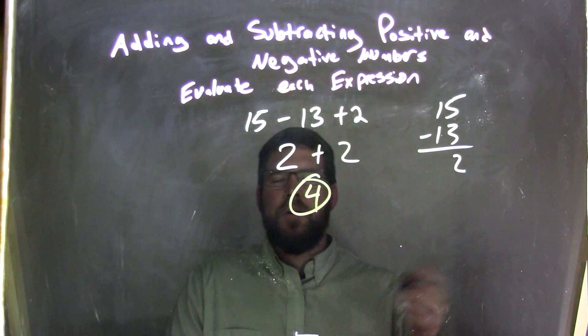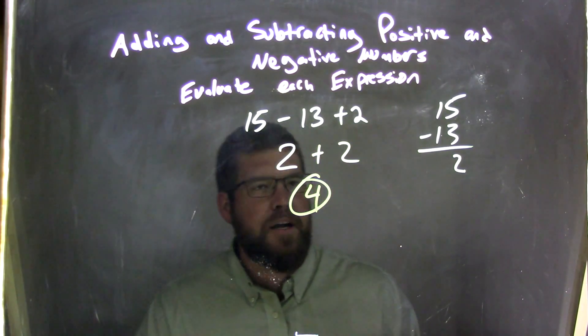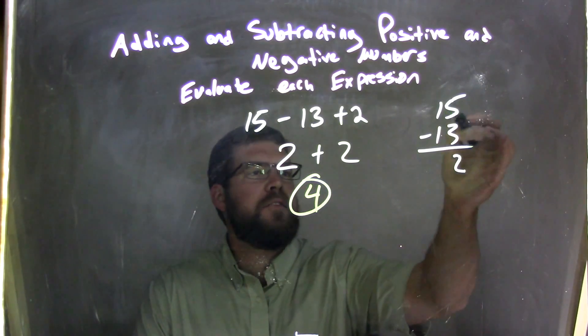So again, let's recap. We started with 15 minus 13 plus 2. We're not going to do a plus or negative here, we just subtracted it. Fairly simple: 15 minus 13.